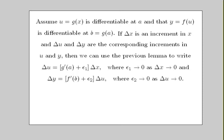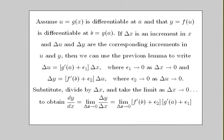Then, substitute the expression for delta u in the first equation for delta u in the second equation. Divide by non-zero delta x, and take the limit as delta x approaches 0. Finally, evaluate the limit and conclude that the derivative of a composite function is the product of the derivatives.